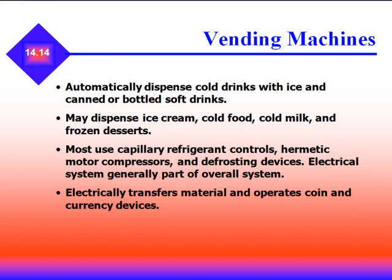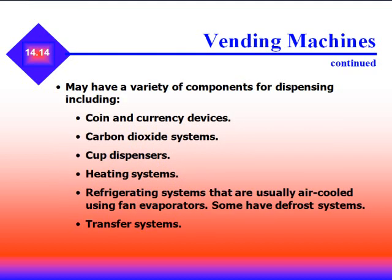Vending machines are also commercial refrigeration. They automatically dispense cold drinks with ice, canned or bottled soft drinks, ice cream, cold food, cold milk, and frozen desserts. Most use capillary refrigerant controls. Vending machines may have a variety of components including coin and currency devices, carbon dioxide systems, cup dispensers, heating systems, refrigerating systems (usually air-cooled), defrost systems, and transfer systems.